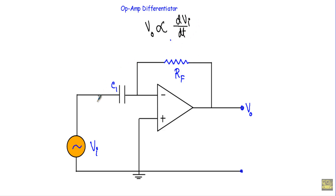If I can show a relationship like this from the circuit, I can say that this circuit is a differentiator circuit. Here the non-inverting terminal is connected to ground. At the inverting terminal, an input voltage VI is applied through capacitor C1. The output terminal is connected to the inverting terminal through a feedback resistor, so this circuit is in negative feedback.